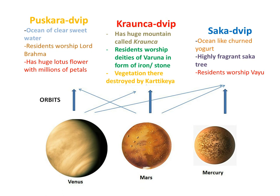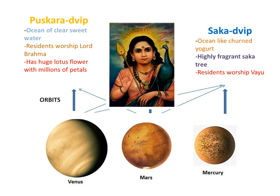But let's focus now on Kronchudreep. It has a huge mountain there called Kronchudreep. However, the vegetation there was destroyed by Kartikeya. This is very interesting, because the planet Mars in Greek and Hindu thought is associated with the god of war.